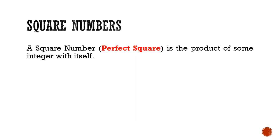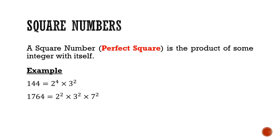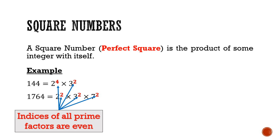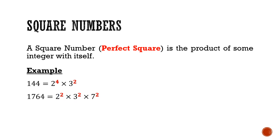Let's begin with the definition of square numbers, also known as perfect squares. These numbers are the product of some integer with itself. For example, 144 and 1764 are square numbers. An interesting fact is that if you prime factorize these numbers, the indices of each prime factor are even. When square rooted, these numbers give a nice whole number.